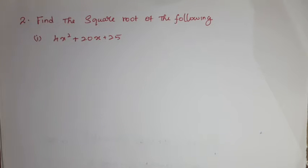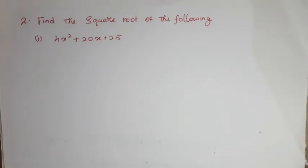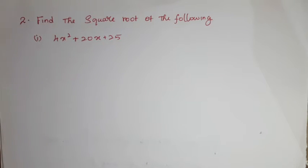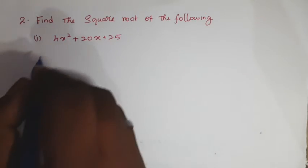Common factorization, grouping method, and third is the formula method. Since the first and last terms are perfect squares, we'll use the formula method.